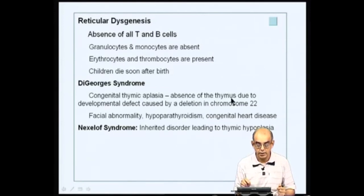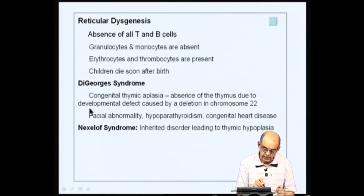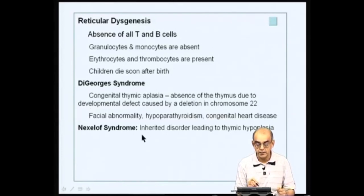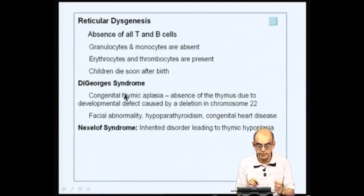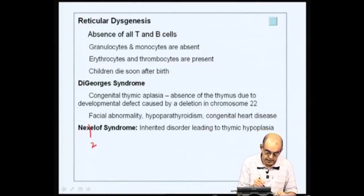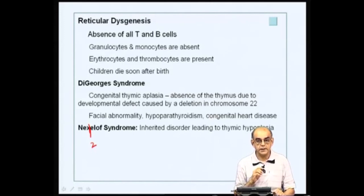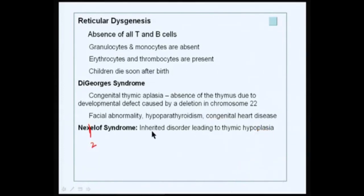Then you have what is called Nezolof syndrome, which is characterized by thymic hypoplasia. While DiGeorge syndrome is a developmental defect, Nezolof syndrome is an inherited disorder. Looking at the immunodeficiency that affects the bursal environment or the pre-B cell, you have Bruton's X-linked agammaglobulinemia, where IgG levels are low and the defect stems from a defect in BTK or Bruton's tyrosine kinase.